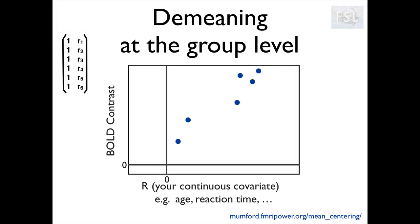In the advanced preprocessing talk, we saw examples of confounds that we can include as extra regressors in our single subject GLM. Here we will see how to add confounds at the group level, for example if we want to control our results for age or disease duration or any other variable. We can add such regressors to our group level design matrix, but we need to be careful about how to include them, and in particular if and when we need to demean them.